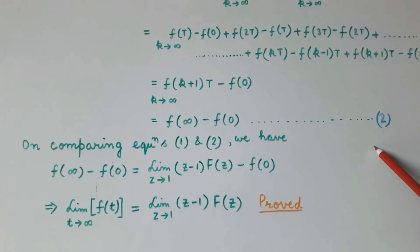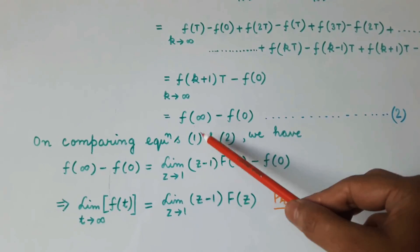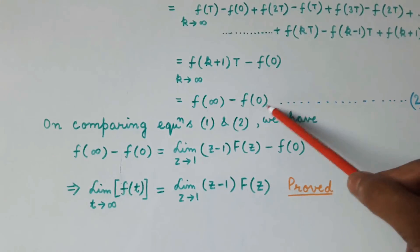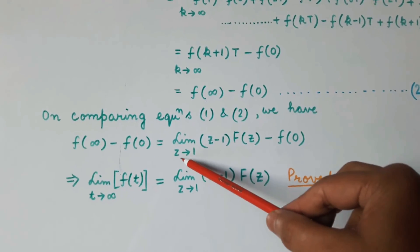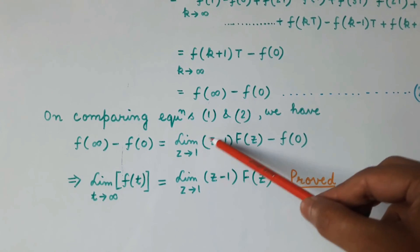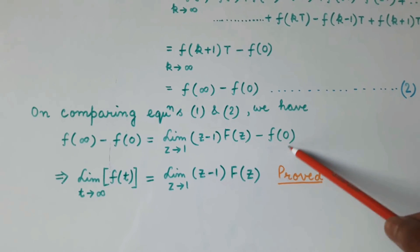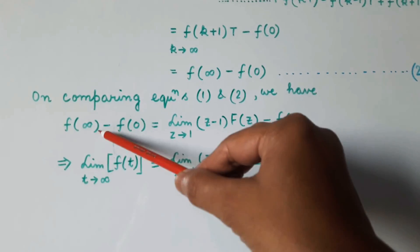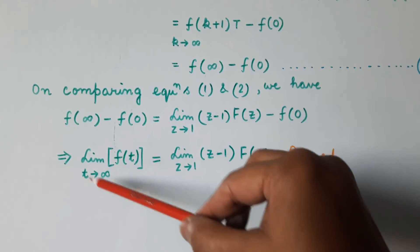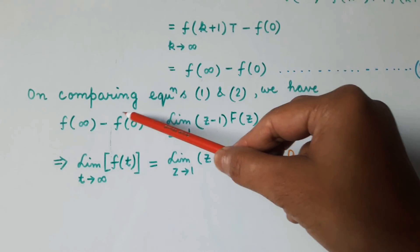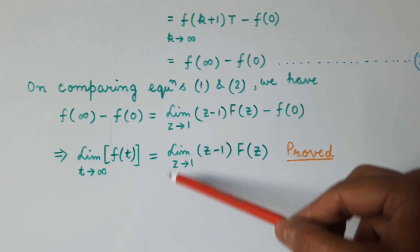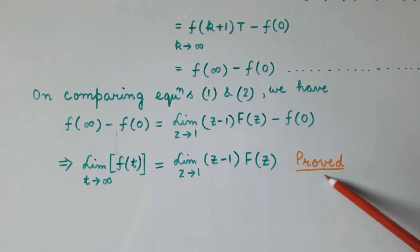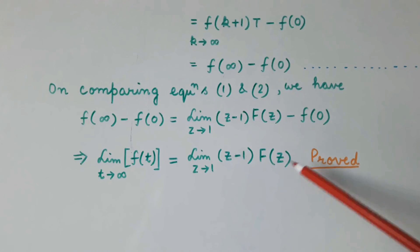Now comparing equations 1 and 2, we have f(infinity) minus f(0) equals the limit as z tends to 1 of (z minus 1) times F(z), minus f(0). Therefore, f(infinity), which is the limit of f(t) as t tends to infinity, equals the limit as z tends to 1 of (z minus 1) times F(z). So we have proved the final value theorem.